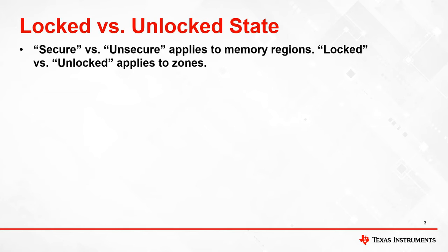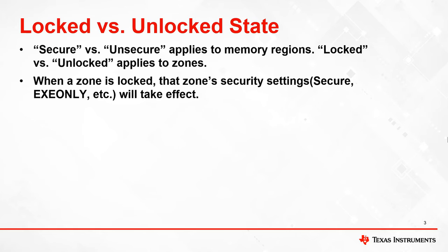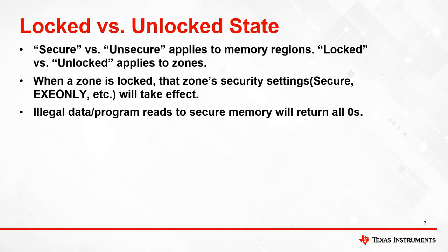The terms locked and unlocked refer to when a particular zone's security settings have been activated. If a zone is unlocked, all memory regions designated to that zone are effectively unsecure and can be accessed by any user, such as JTAG or the CCS memory browser. When a zone is locked, security settings specified by the user will take effect for all memory regions secured by that zone.